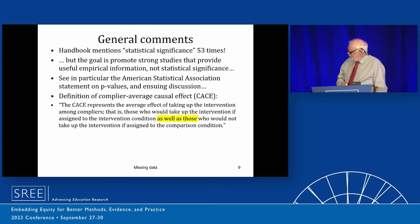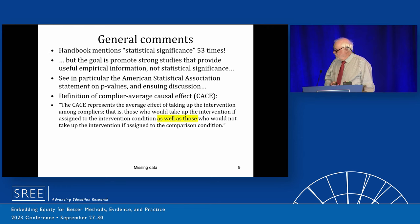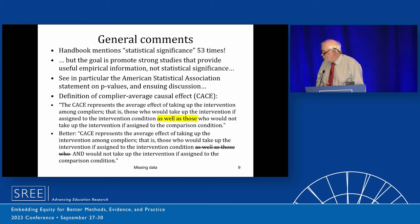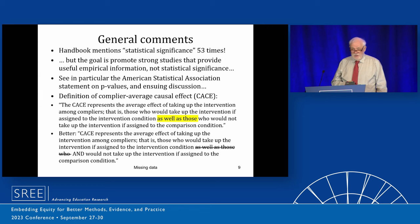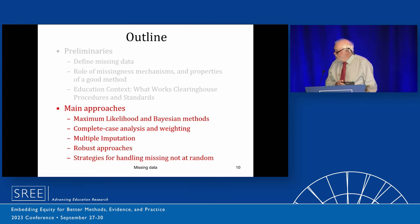Another thing that bothered me a little bit: there is a complier average causal effect, and the manual defines the CACE as the average effect of taking up the intervention among compliers — those who take up the intervention if assigned to the intervention, as well as those who would take up the intervention if assigned the comparison condition. That is not the right definition of the CACE. Instead of saying 'as well as those,' I would say 'and.' The point about the CACE is you have to comply with both conditions if you're assigned to them. So just a minor editorial comment. I'll come back to the missing data aspects of this a bit later.